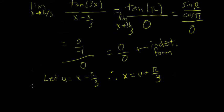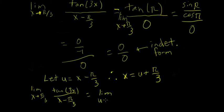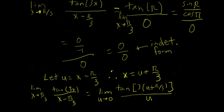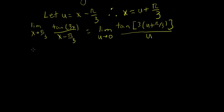So the limit as x tends to pi over 3 of tangent of 3x over (x minus pi over 3) becomes the limit as u tends to 0 — since u is x minus pi over 3 — of the tangent of 3 times (u plus pi over 3) over u. Expanding, that's the tangent of 3u plus pi over u.